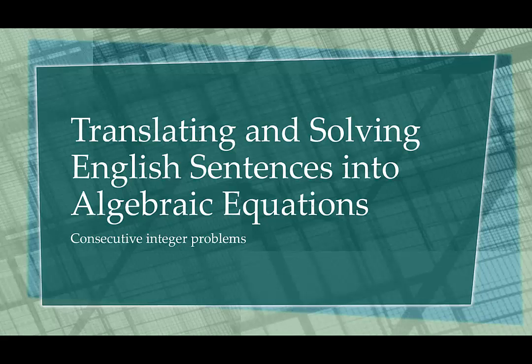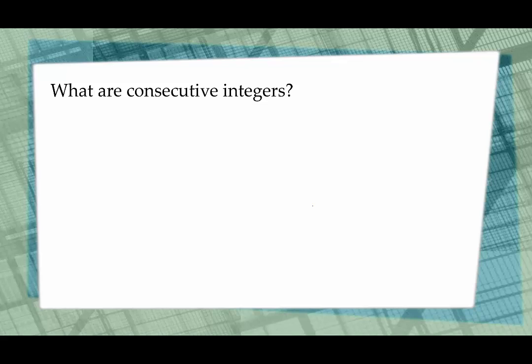Before we get started, what exactly are consecutive integers? Consecutive integers are integers in which one is right after the other. So if I said 7, the next consecutive integer would be 8. If I said negative 20, the next consecutive integer would be negative 19. Be careful — the next integer will be the one bigger than it, and negative 19 is bigger than negative 20.